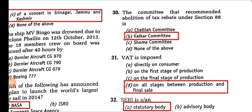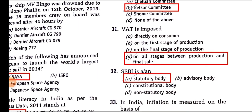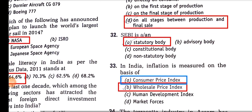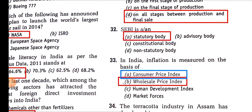VAT — value-added tax — is imposed on all stages between production and final sale. That is why GST has been implemented to end this discrimination. SEBI is a statutory body.